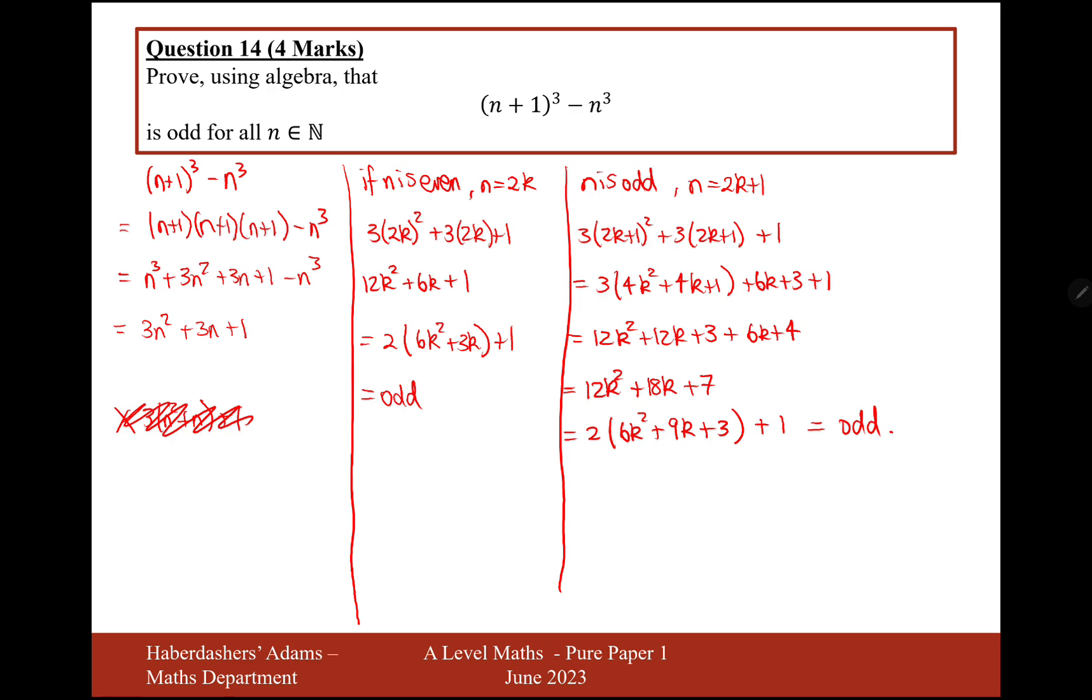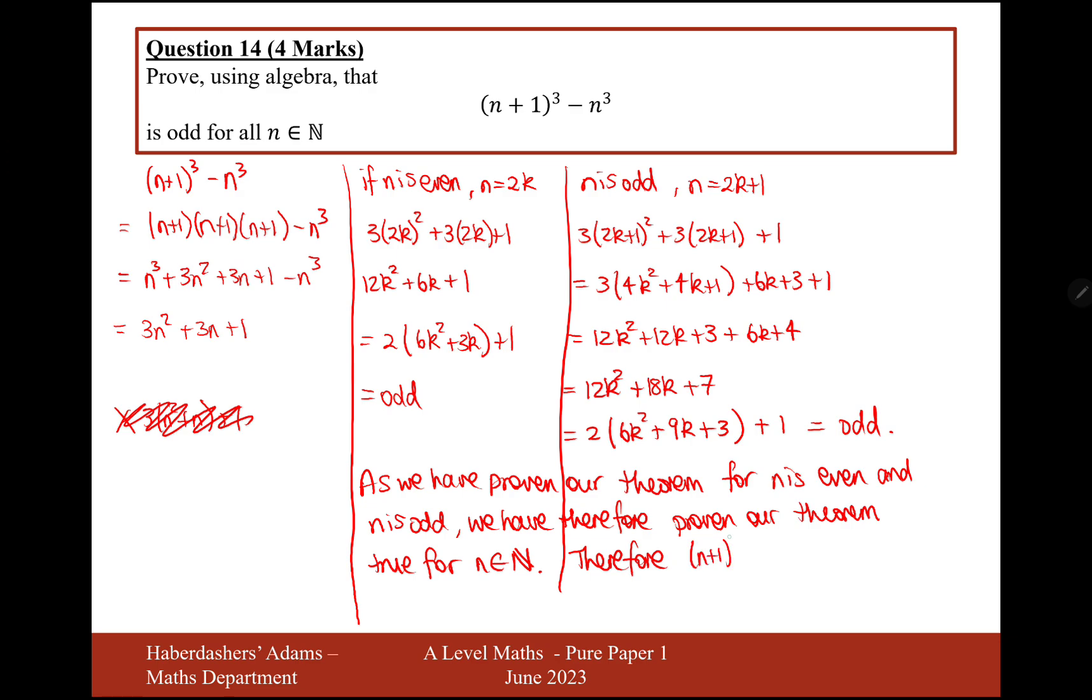Okay, so we've proved that the rule works for even numbers and we've proved the rule works for odd numbers. So therefore, the rule does work for all n existing in the natural numbers. And we need to write a conclusion to this effect. As we have proven our theorem for n is even and n is odd. We have therefore proven our theorem true for n existing in the natural numbers. Therefore, n plus 1 cubed minus n cubed is odd for all n existing in the natural numbers.